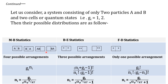For Bose-Einstein statistic, the number of possible arrangements is calculated using the relation: (N_i + G_i − 1)! divided by N_i! and (G_i − 1)!. Using our example, N_i is 2 and G_i is 2, so we get (2 + 2 − 1)! = 3! divided by 2! times 1!. Three factorial is 3 × 2!, which cancels with 2! in the denominator, and we get three possible arrangements.